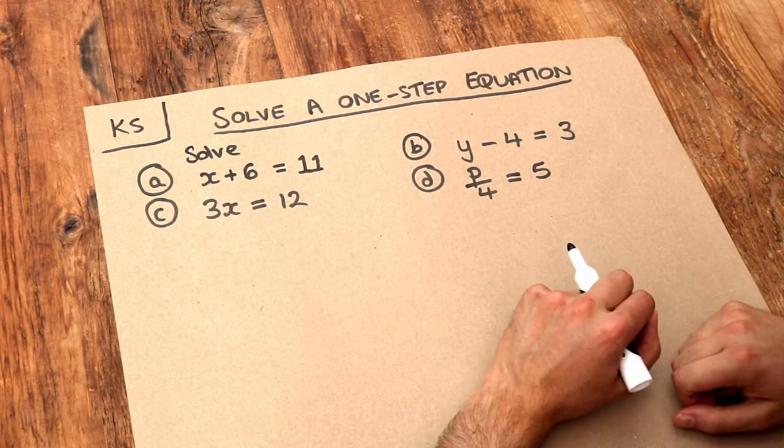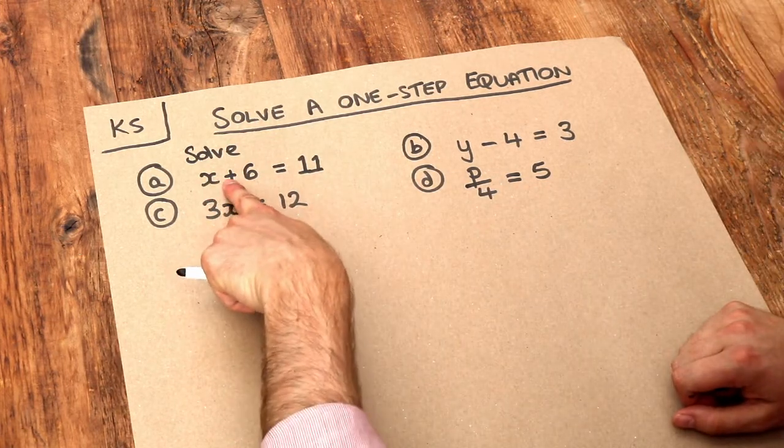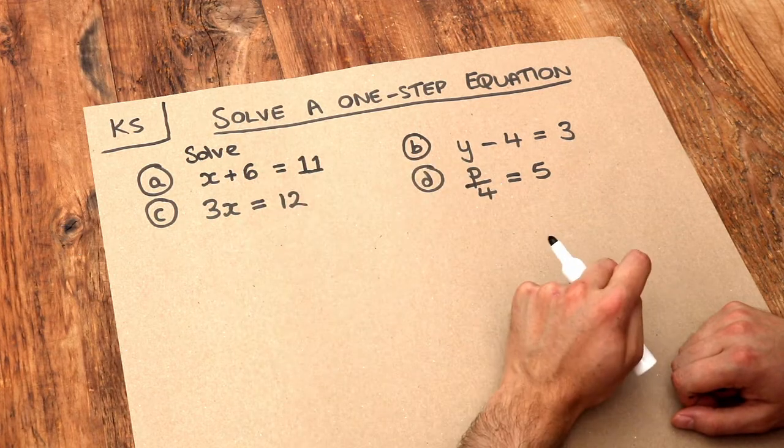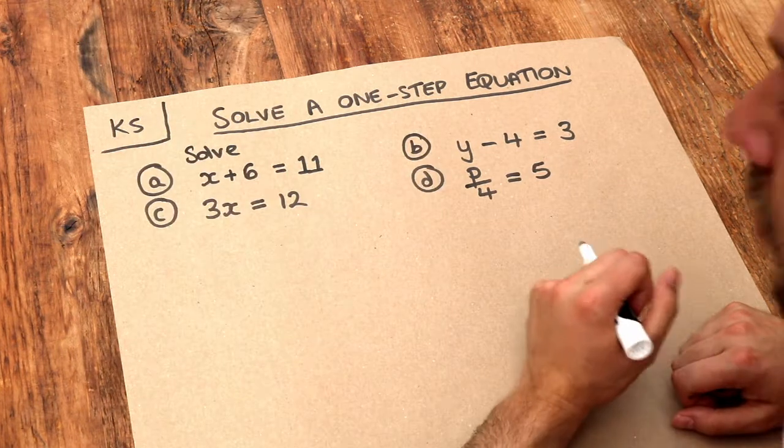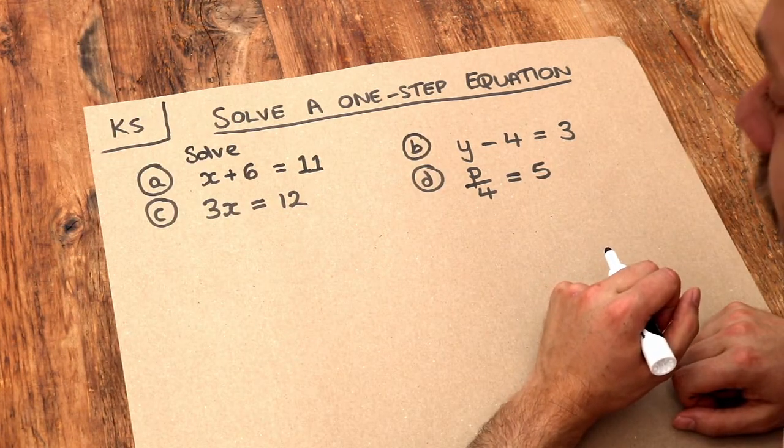Now sometimes you can do it in your head. You just think, well, what plus 6 is equal to 11? Well, 5 plus 6 is equal to 11. So instantly we've got the solution to the equation: x is equal to 5.